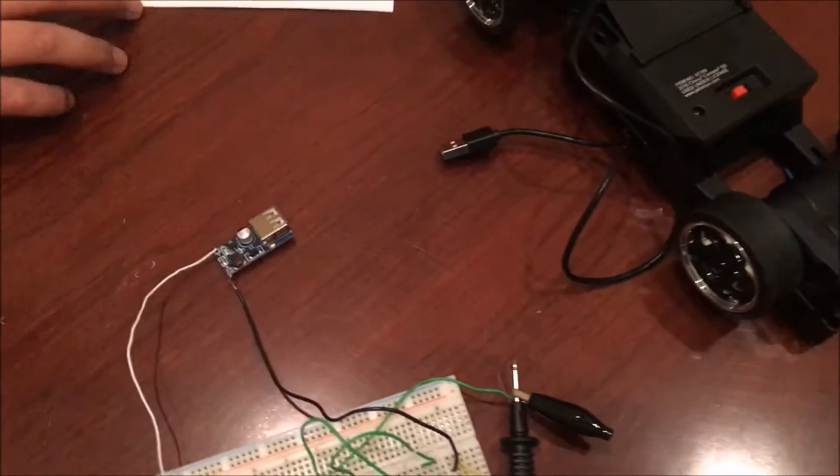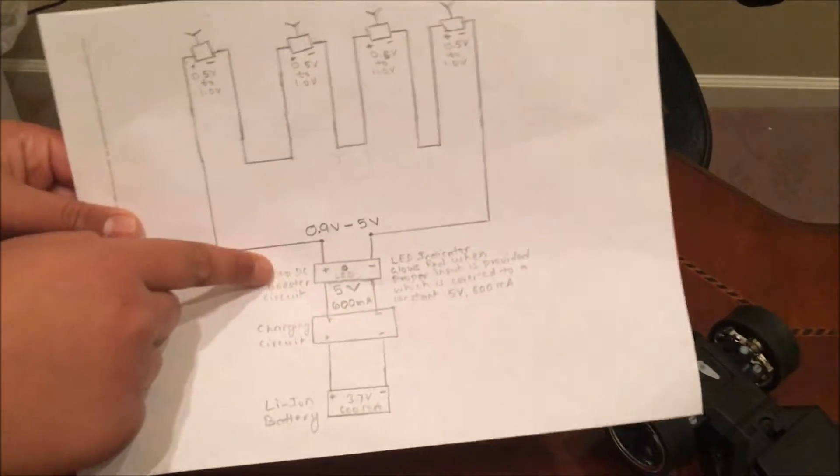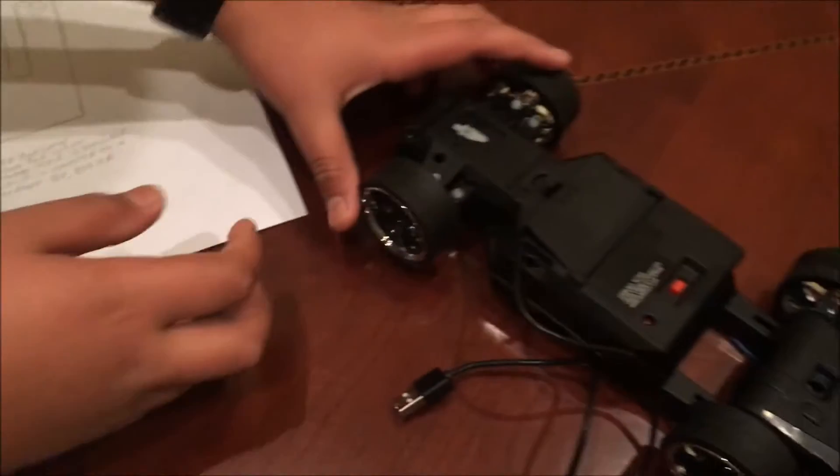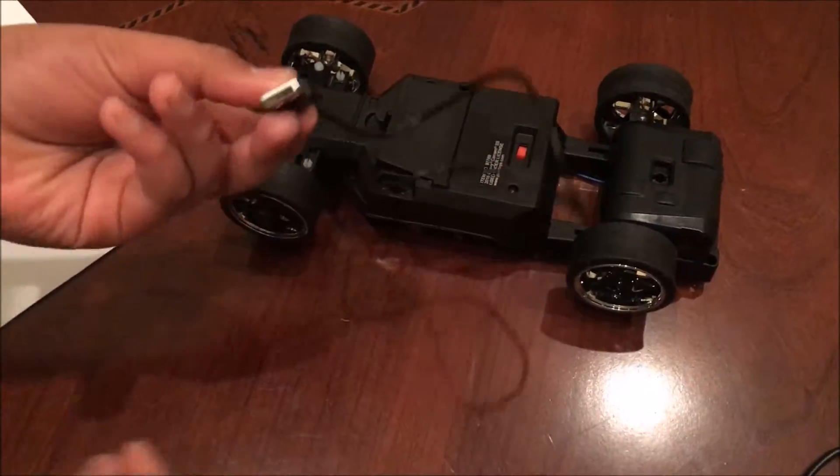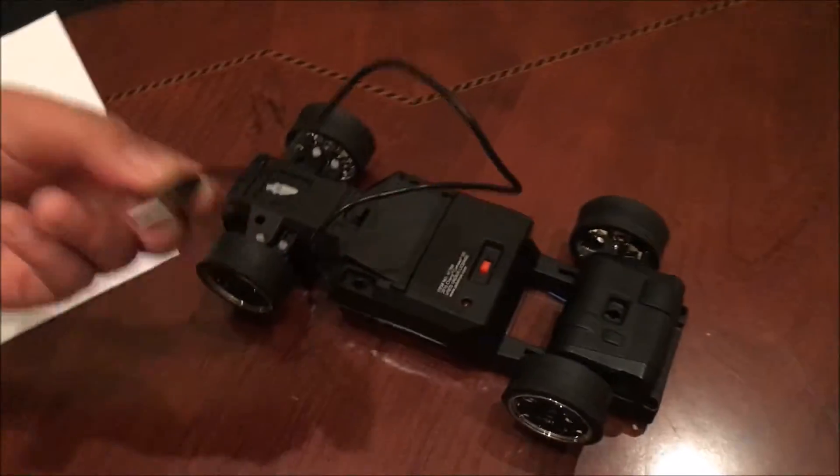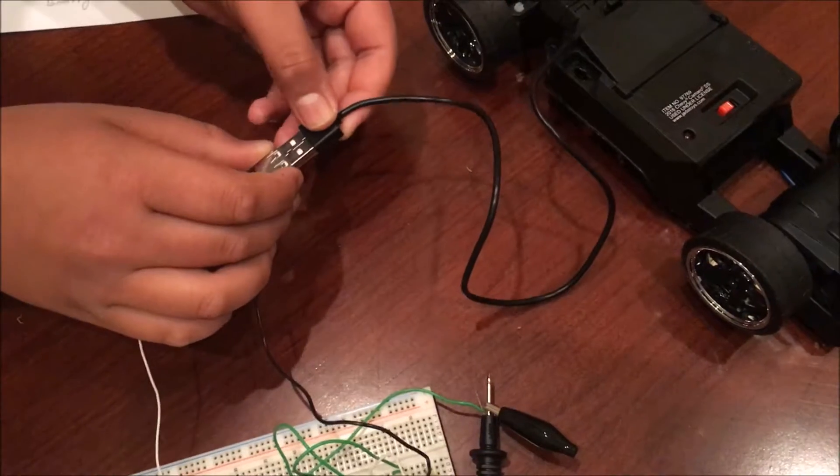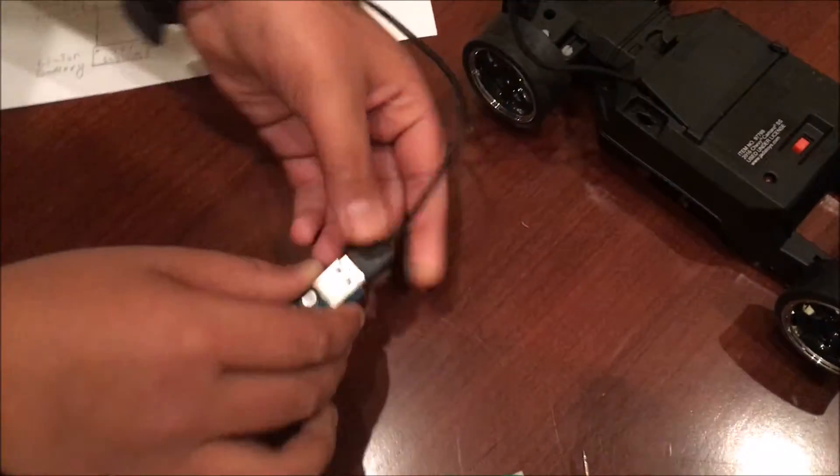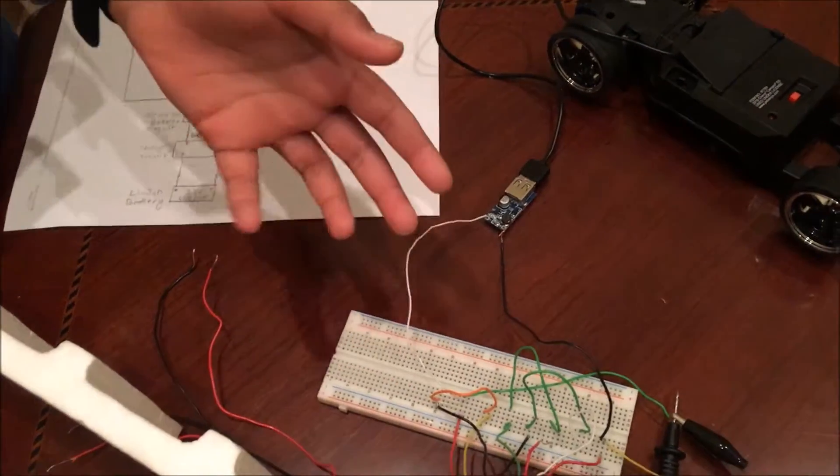So according to the circuit diagram, from the boost converter, it goes to the charging circuit. And the charging circuit is in this RC car. As you can see, there's a USB wire here. There's a USB port on this, so you can easily connect it into the charging circuit.